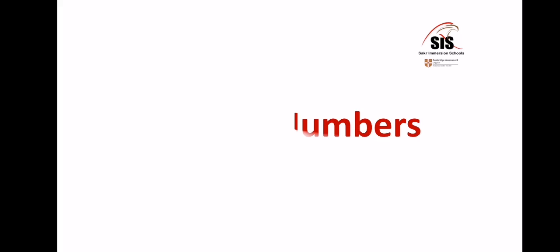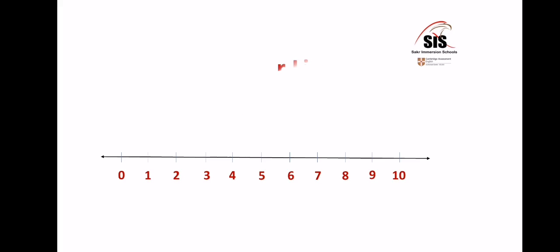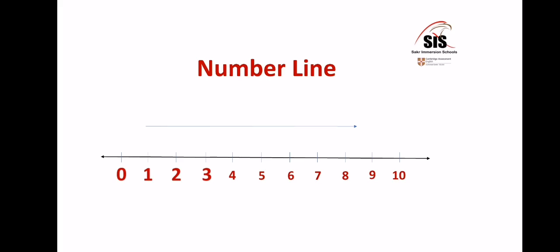Hello dear students, today we're going to learn about bigger numbers. This is called a number line — it's a line that has numbers on it and it has no end. This means that we can count till any number. We use the number line to help us count and compare numbers. As we count forward, or to the right side on the number line, numbers get bigger: zero, one, two, three, four, five, six, seven, eight, nine, ten.